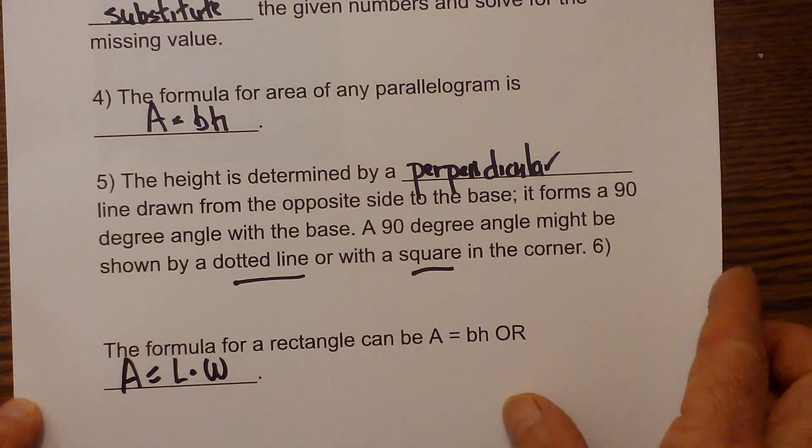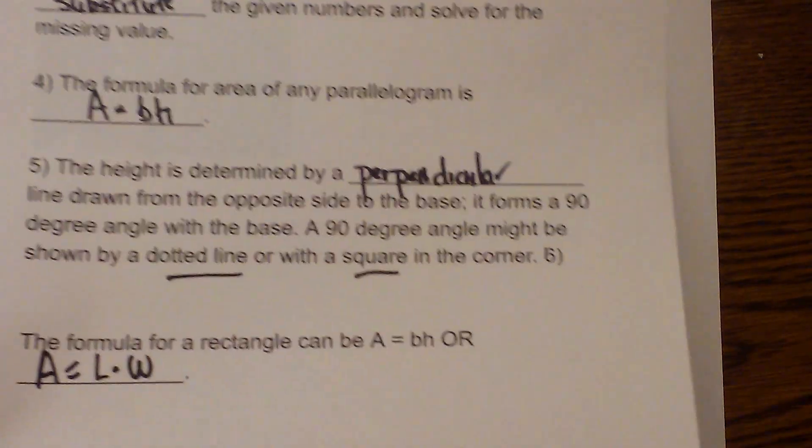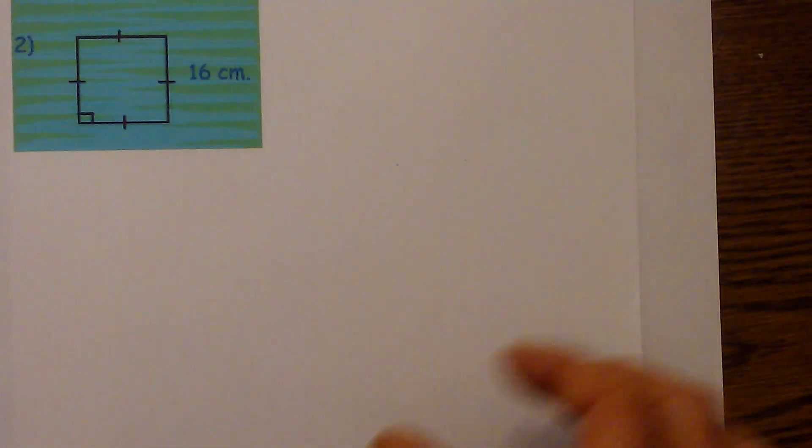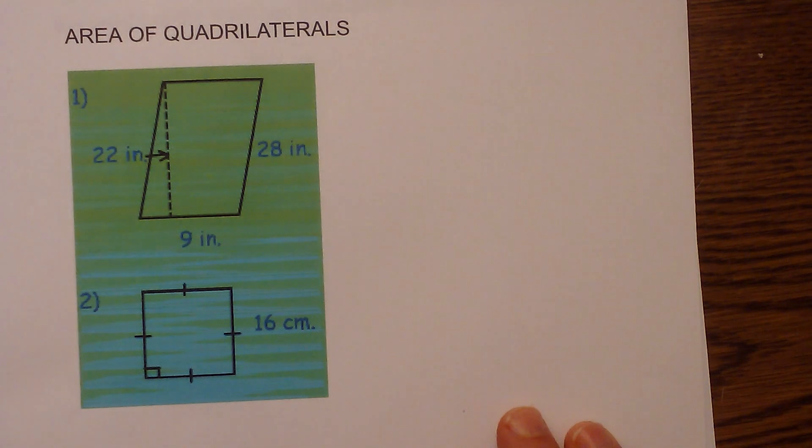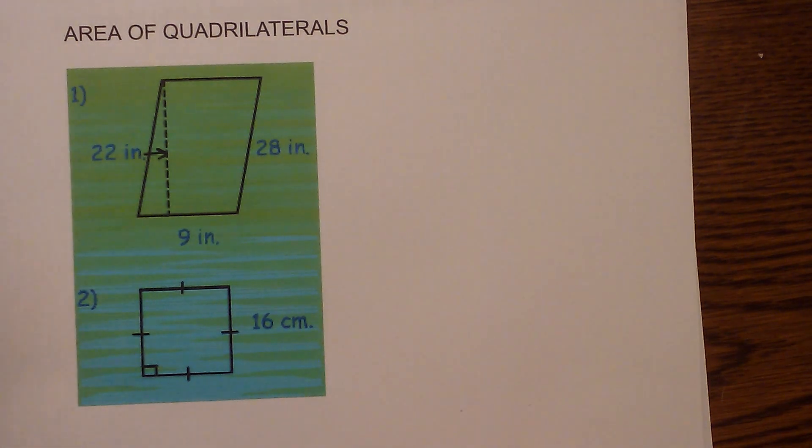Let's apply this to a couple problems. The first problem I would like to solve is we have this quadrilateral. The reason I chose this one is it will show you how the height is this dotted line, not the 28 inches.